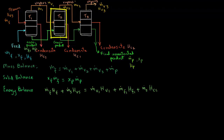The second equation is for the second effect of the evaporator, for which we have m.f1 times hf1, representing the enthalpy of the feed stream into the second effect. Plus m.v1 times hv1 — note that the vapors leaving from the first effect are now the heating medium for the second effect. That equals m.v2 times hv2, the mass flow rate and enthalpy of vapors leaving the second effect. Plus m.f2 times hf2, the product stream leaving the second effect. Plus m.v1 times hc1, the enthalpy of that condensate.